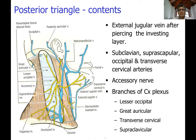Other contents of the posterior triangle include the suprascapular, occipital, and transverse cervical arteries — all branches of the subclavian artery — and the spinal root of the accessory nerve, which supplies both the sternocleidomastoid anteriorly and the trapezius posteriorly.